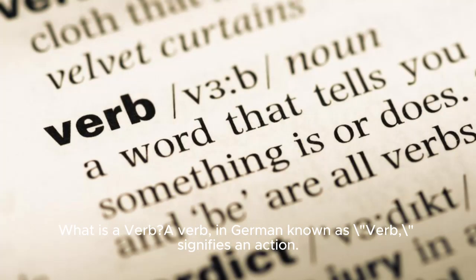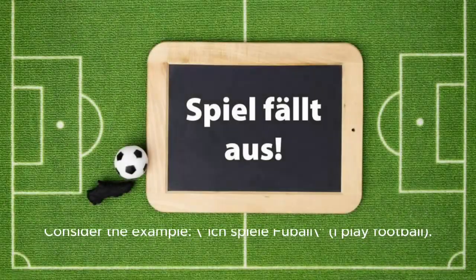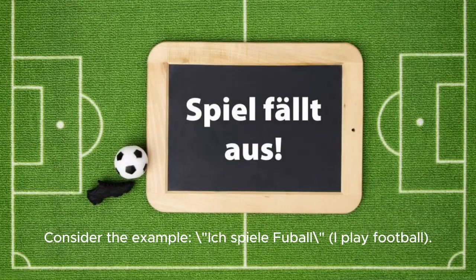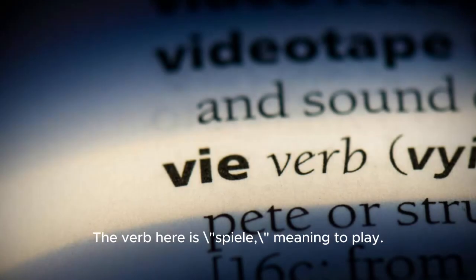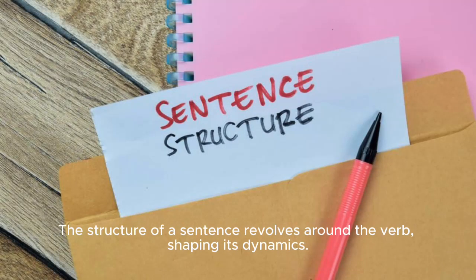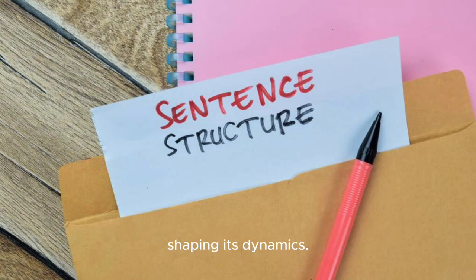What is a verb? A verb, in German known as Verb, signifies an action. Consider the example Ich spiele Fußball — I play football. The verb here is spiele, meaning to play. The structure of a sentence revolves around the verb, shaping its dynamics.